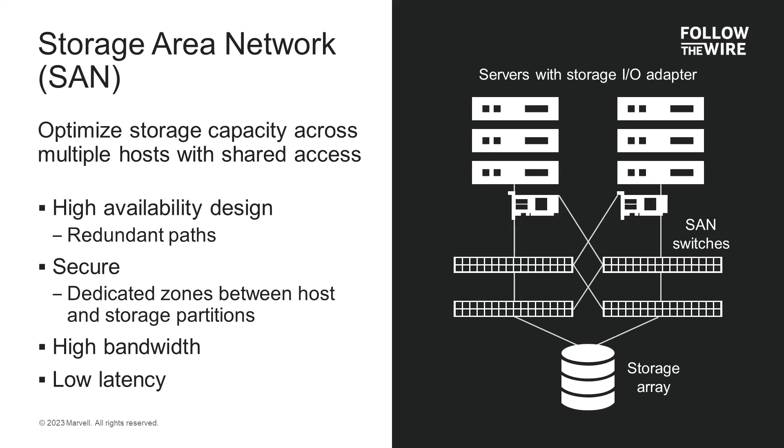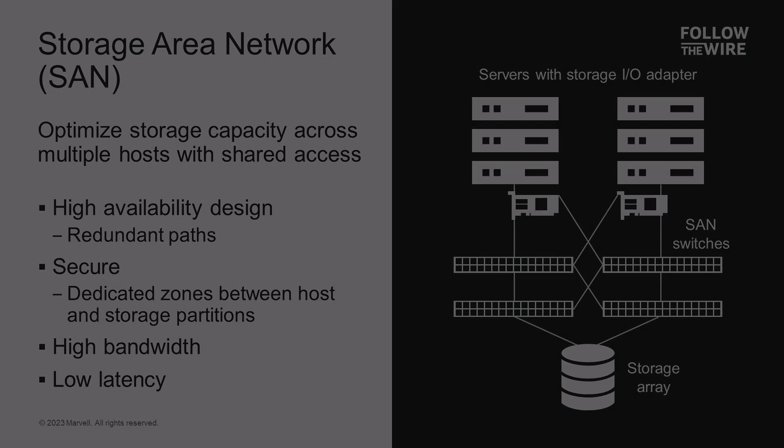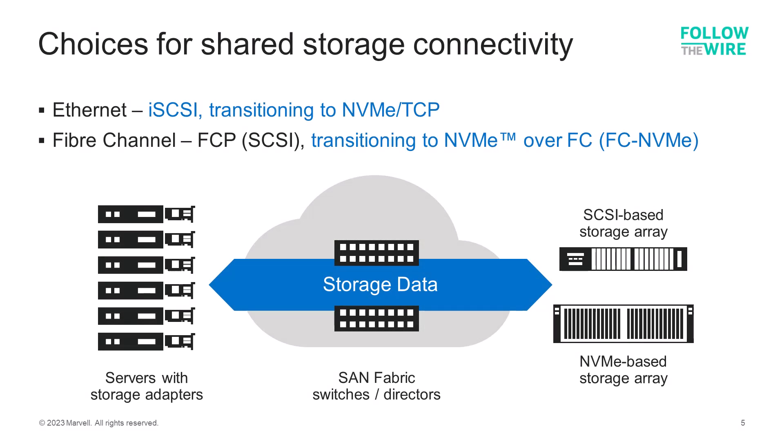SANs are secure — if deployed correctly, they are a dedicated storage-only network that's air-gapped from the corporate network and internet access. This is always the case when deploying using Fiber Channel protocol, and it's a best practice when using Ethernet, although some architects use shortcuts like VLANs in Ethernet environments. SANs enable delivering high bandwidth up to 64 gigabits per second for Fiber Channel today and up to 100 gigabits per second for Ethernet, along with providing a low-latency superhighway for storage traffic. There are two main choices for SAN connectivity: Ethernet and Fiber Channel, with other options like SAS or InfiniBand being more niche approaches.